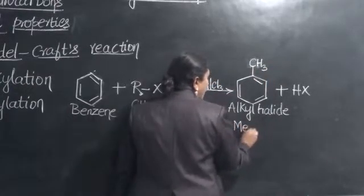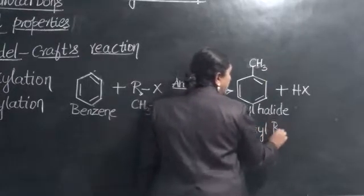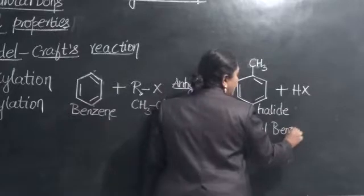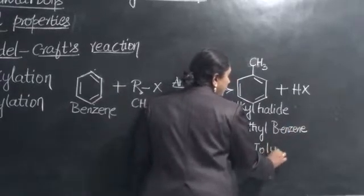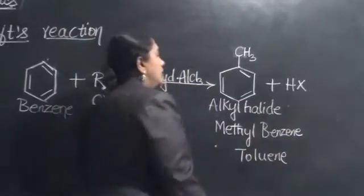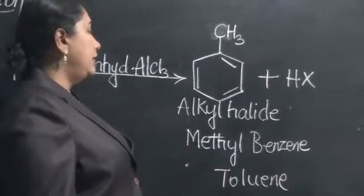Therefore, the name of this compound will be methyl benzene. This would be the correct IUPAC nomenclature. Though often this compound is referred by the name as toluene. The IUPAC nomenclature of toluene is methyl benzene.